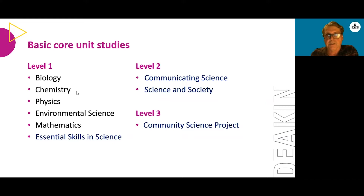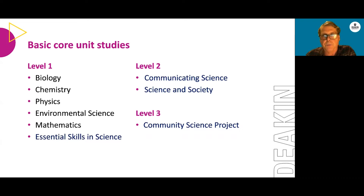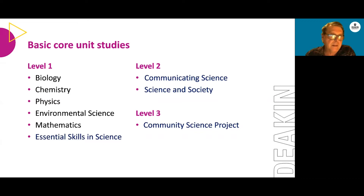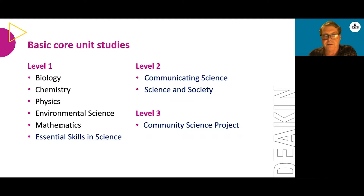We understand that students come into Deakin with varying backgrounds in science — not everybody has done VCE chemistry. So we provide a tiered structure to our first year units depending on your background. For instance, there are two first year chemistry units: a more basic unit for students without a strong chemistry background, and a more advanced unit for those who have done well in VCE chemistry, which can lead on to a chemistry major. Similarly, for mathematics, students can choose between a statistics unit or a mathematical modelling unit, based on which major they ultimately want to pursue. You'll receive relevant course advice when you enrol.